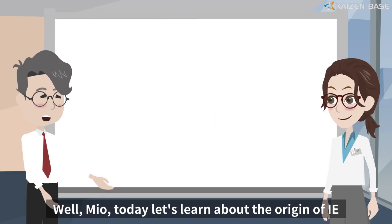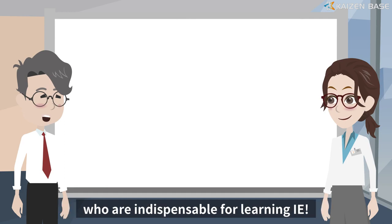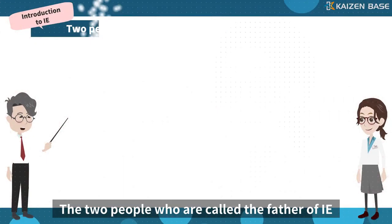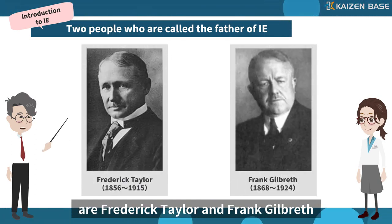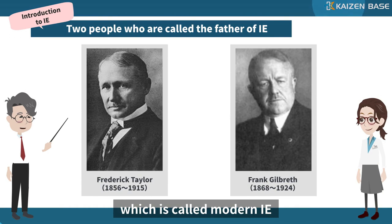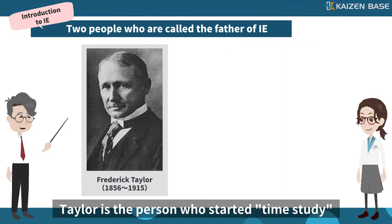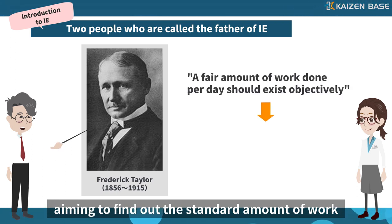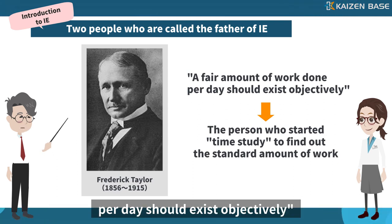Miel, today let's learn about the origin of IE starting with the achievements of two people who are indispensable for learning IE. The two people who are called the father of IE are Frederick Taylor and Frank Gilbreth. The present form of IE, which is called modern IE, began with Taylor's scientific management method. Taylor is the person who started time study, aiming to find out the standard amount of work with the belief that a fair amount of work done per day should exist objectively.